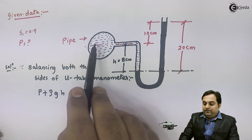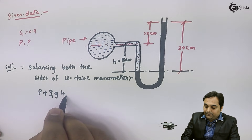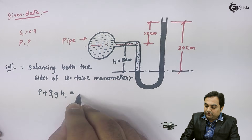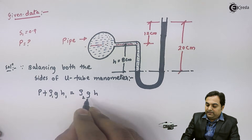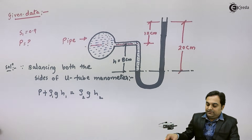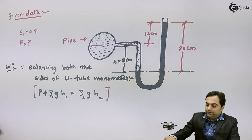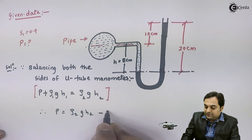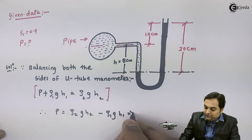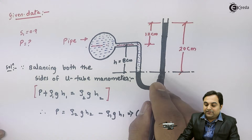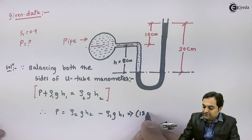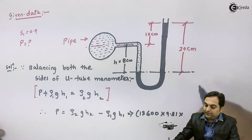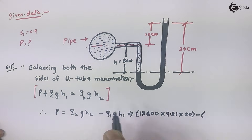The fluid inside the pipe is denoted by suffix 1, and on the right side we only have mercury, denoted by suffix 2. So the balancing equation for this U-tube manometer is: P + ρ₁·g·H₁ = ρ₂·g·H₂. To calculate pressure P, we keep P on one side: P = ρ₂·g·H₂ − ρ₁·g·H₁. Here ρ₂ is the density of mercury, which is 13,600 kg/m³ — this value we must remember. g = 9.81, and H₂ = 20 centimeters.